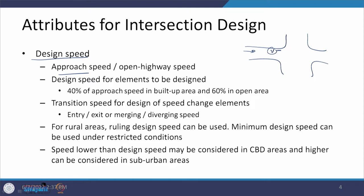When in a built-up area, the design speed can be taken as 40 percent of the approach speed, and 60 percent of the approach speed in the case of an open area. So when you are on a highway with an intersection, we consider 60 percent of the approach speed. There can also be acceleration lanes, deceleration lanes, or a requirement where the vehicle reduces its speed from V to V1 when taking a turn, creating a transition from high speed to a lower value. These transition speeds are considered in the design of speed change elements.